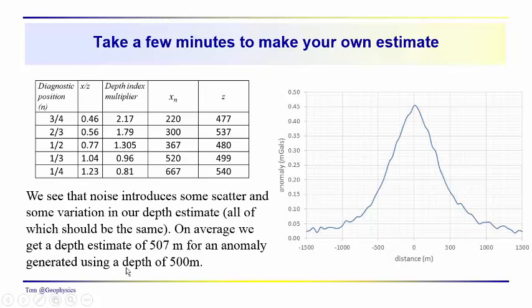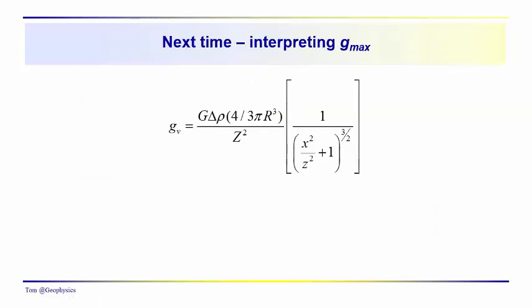In fact, for this anomaly, it was generated using a depth of 500 meters. You can see before, even with a noise free data set, I think we came up with, I don't know, 480 or something like that. So noise is going to complicate your analysis.